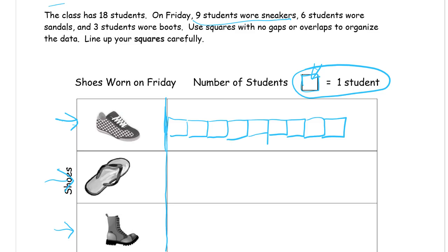Six students wore sandals, so we're going to start right here on this line and make our squares the same size. If you look at the sneakers, that went to nine, but the six for sandals is going to be one, two, three, four, five, six — it should stop here because that's how long six is compared to the sneakers bar. Those are about the same size; some are a little bigger, but that's about where they should end.